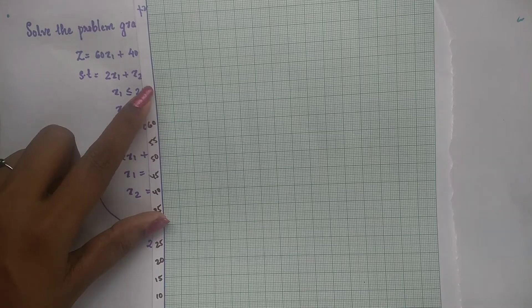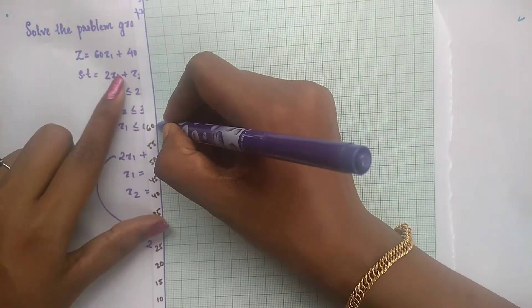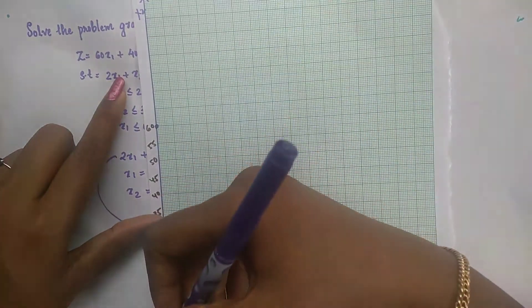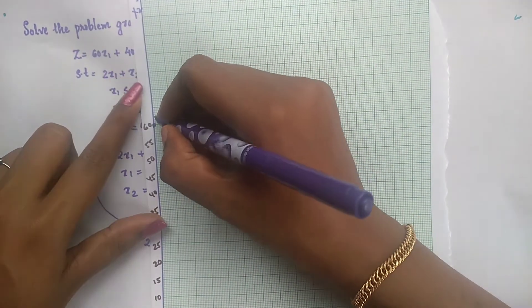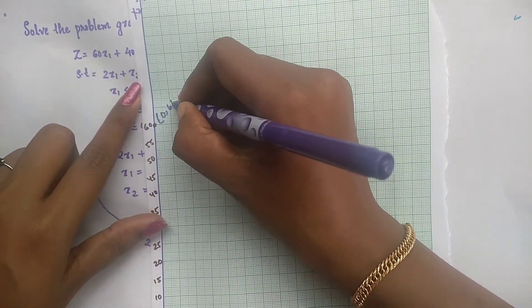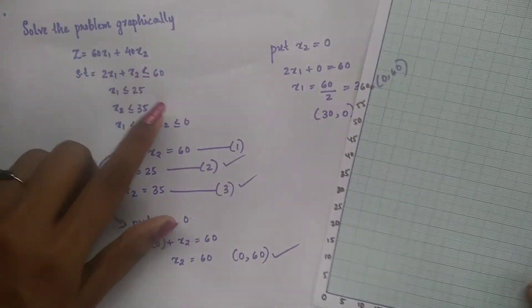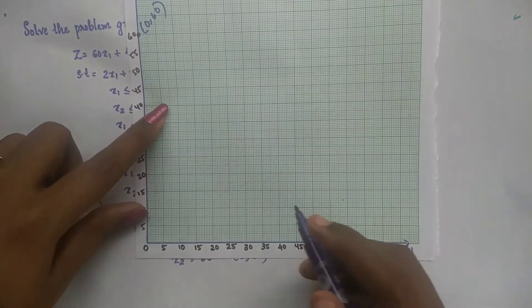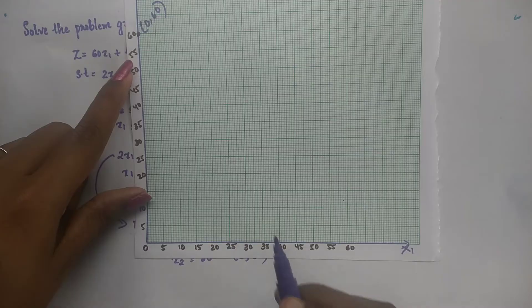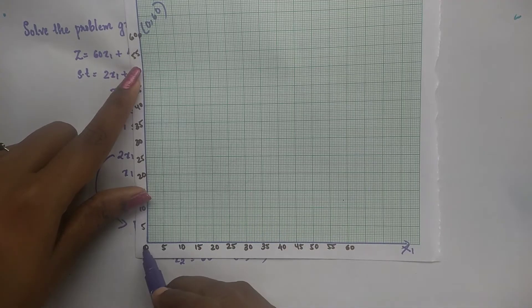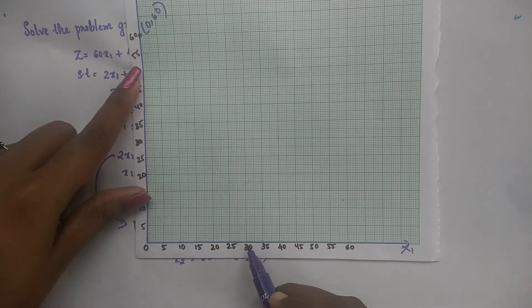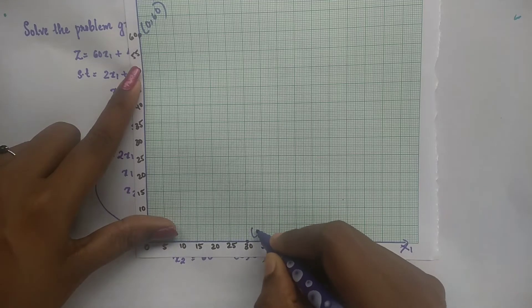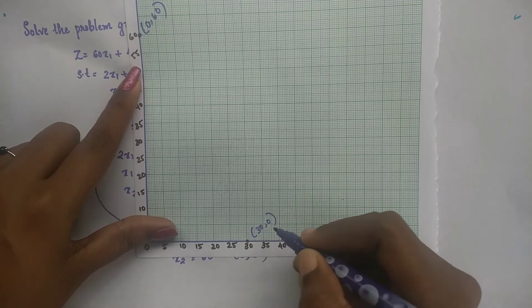For the first equation, put x1 equal to 0, then x2 is equal to 60. So one point is (0, 60). Then put x2 equal to 0, then 2x1 is equal to 60, that is x1 is equal to 30. So the other point is (30, 0). From the first equation we get the two points: (0, 60) and (30, 0).